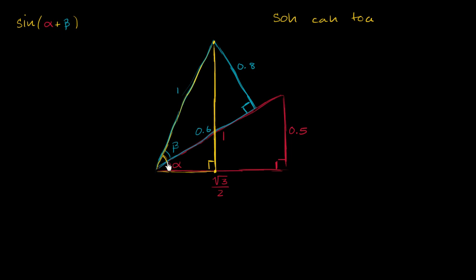Sine of alpha plus beta, it's equal to the opposite side over the hypotenuse. Well, the hypotenuse is just going to be equal to one, so it's equal to this side. So another way of phrasing the exact same problem is, how do we figure out the sine of alpha plus beta?